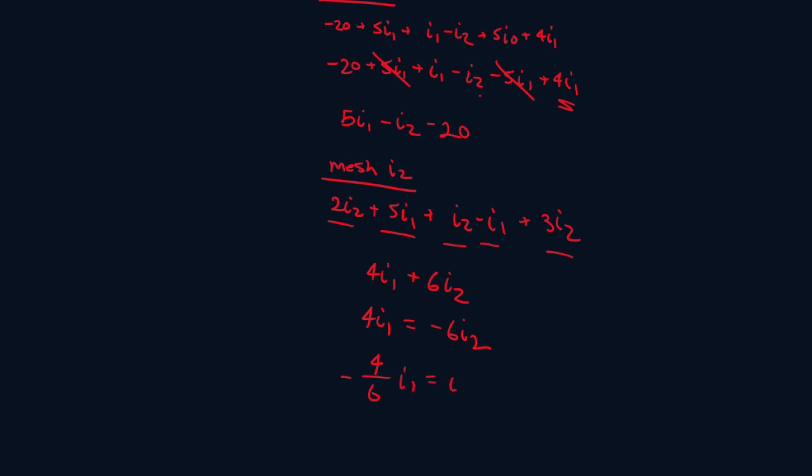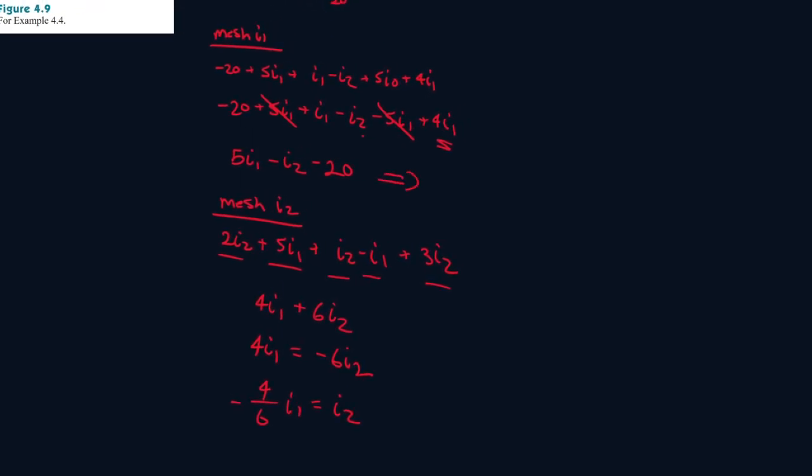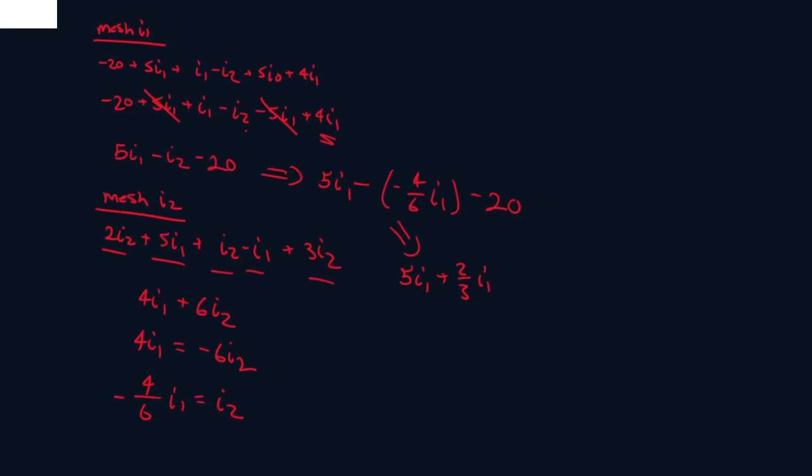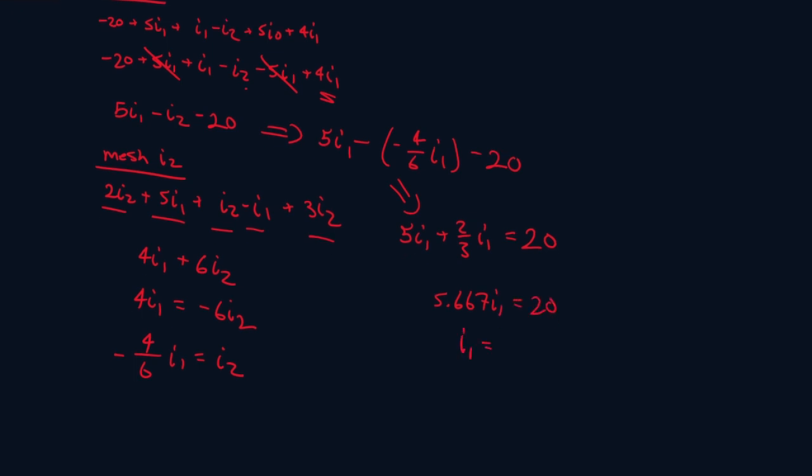Let's plug it into this equation, so it's 5I1 minus, minus 4 over 6, I1 minus 20, so this one turns into 5I1 plus 2 over 3, I1, and let's bring the 20 to the other side. So 5 plus 2 over 3, that gives you 5.667 I1 equals 20, divide both sides by that, we get 3.529,